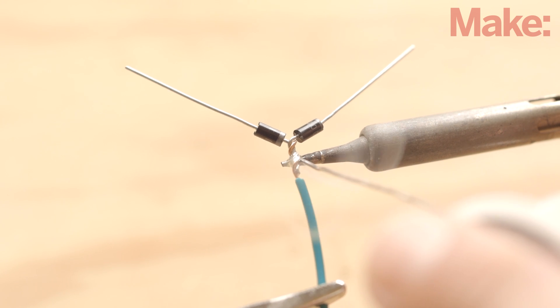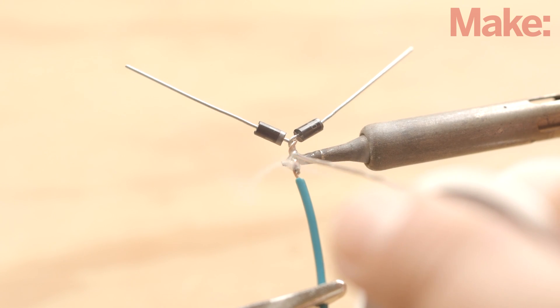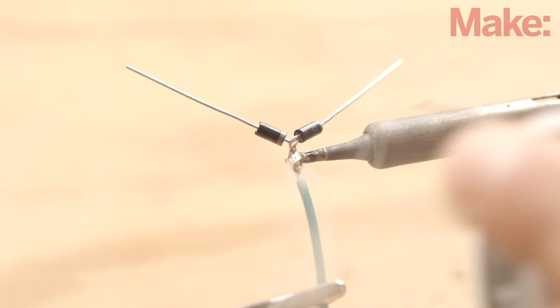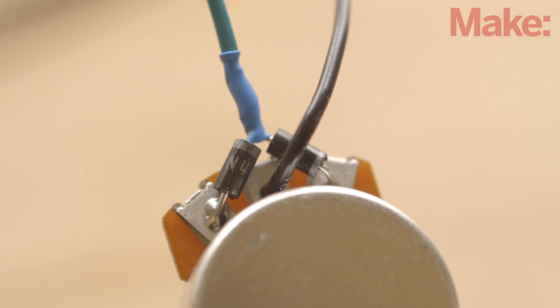Next, twist and solder a pair of diodes and a small length of wire together to make a Y-shaped junction. Note the orientation of the silver stripes. Now you can solder the free ends of the diodes to the potentiometer's outer terminals and another length of wire to the center terminal. Apply heat shrink tubing to make sure the diodes don't short against the center terminal.